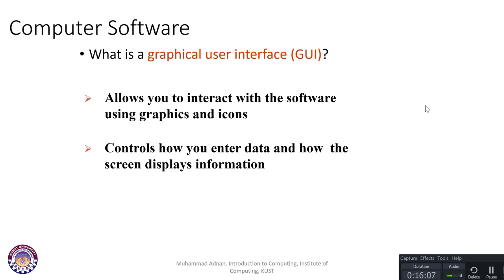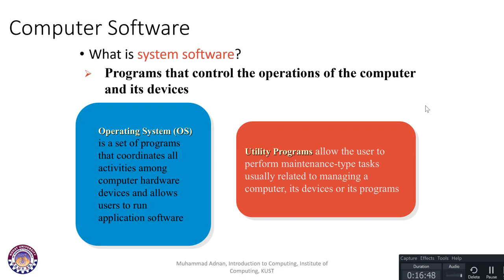A commonly used term is Graphical User Interface, or GUI. GUI makes your job very easy — it allows you to interact with software using graphics and icons. You just push a button or click an icon. It controls how you enter data and how the screen displays information. Because of GUI, computer systems are now easy to use by everyone — even children.